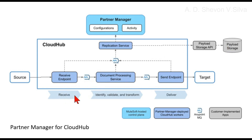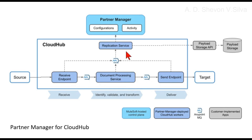The send endpoint is connected to the target. In parallel, you can see the receive, identity validate, and transform stages, and the deliver stage. The MuleSoft control plane is here. The Partner Manager deployed Cloud Hub workers include the receive endpoint, document processing service, send endpoint, and replication service. Anypoint MQs and customer-implemented apps are shown here, including the payload storage API and payload storage.